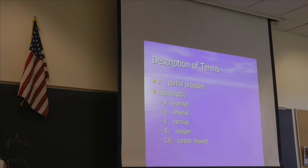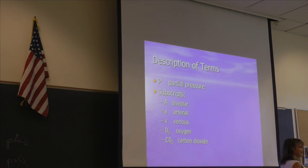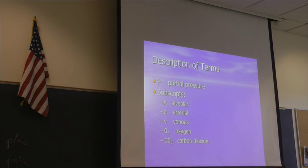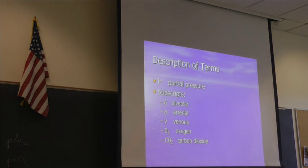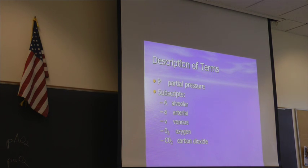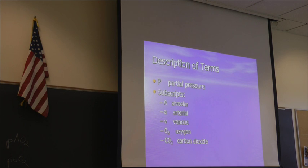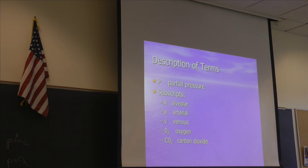Pressure of carbon dioxide in the vein. So when we draw an arterial blood sample, we can measure the amount of oxygen that's in the blood, and it becomes the partial pressure that's dissolved in the blood. That's the big deal with the P.